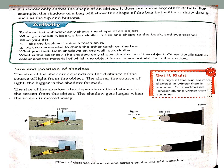The shadow gets larger when the screen is moved farther away. If you move the screen far from the object, the shadow will be larger. If the screen is kept close to the object, the shadow will be smaller. So, the size and position of the shadow mainly depend on two things: the distance of the light source from the object, and the distance of the screen from the object.